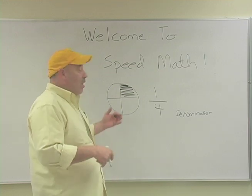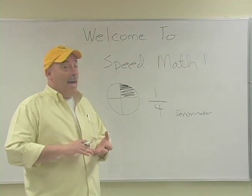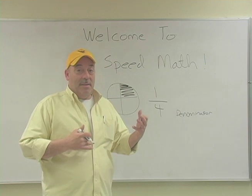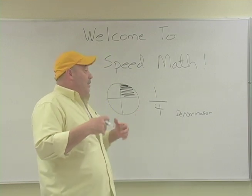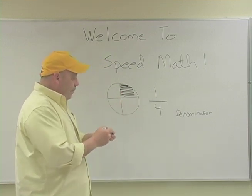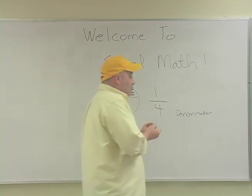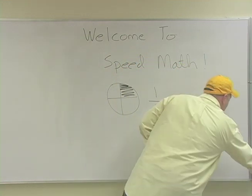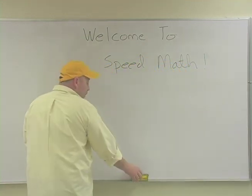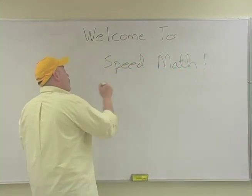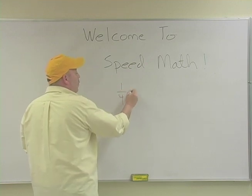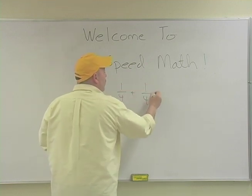And it works for two thirds, it works for one half, five eighths, seven ninths — the bottom number always represents the whole. With that understanding, what we are going to do here is take two fractions: one fourth plus one fourth.